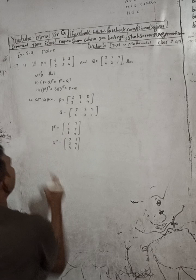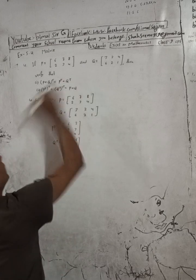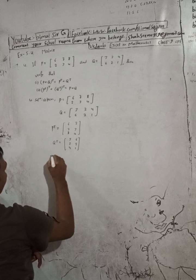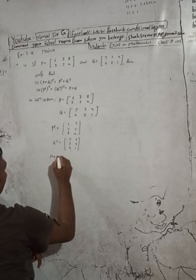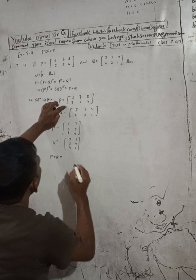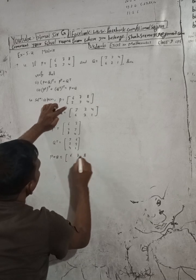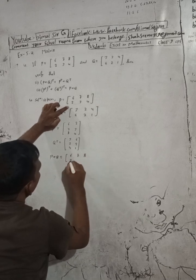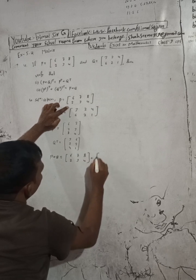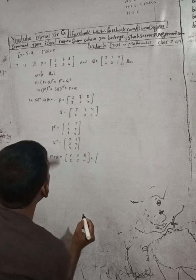We got P transpose and Q transpose. Now let's find P plus Q. P plus Q: here P is [6 7 8 / 2 3 4] plus Q is [3 2 4 / 6 2 1].